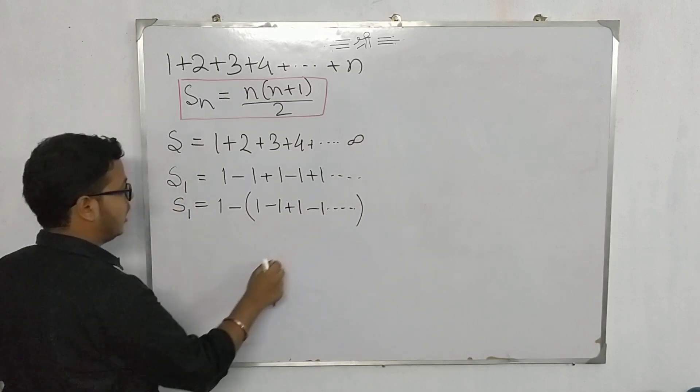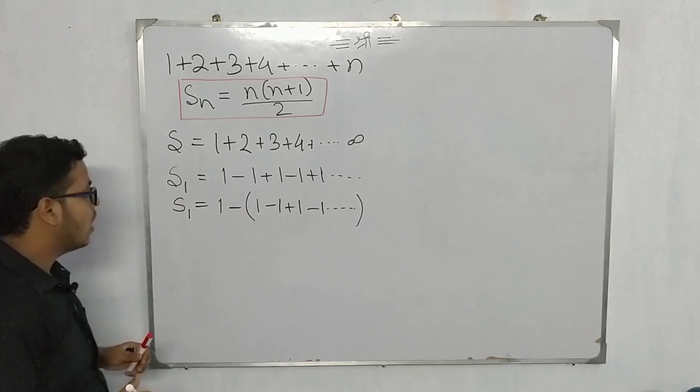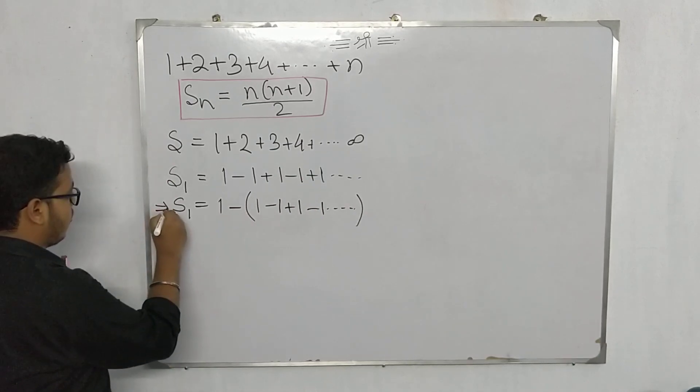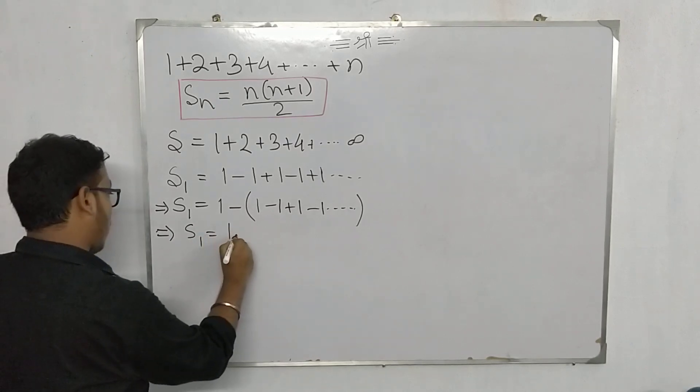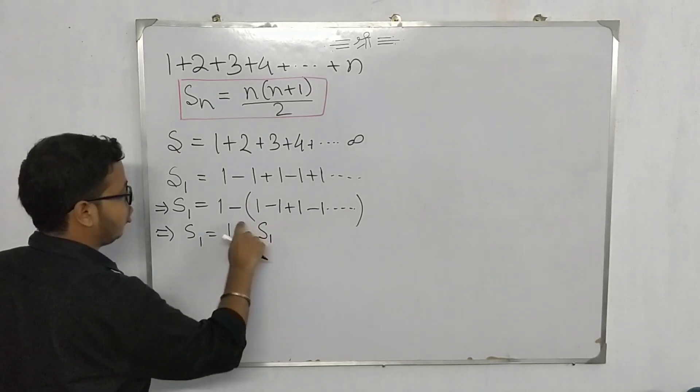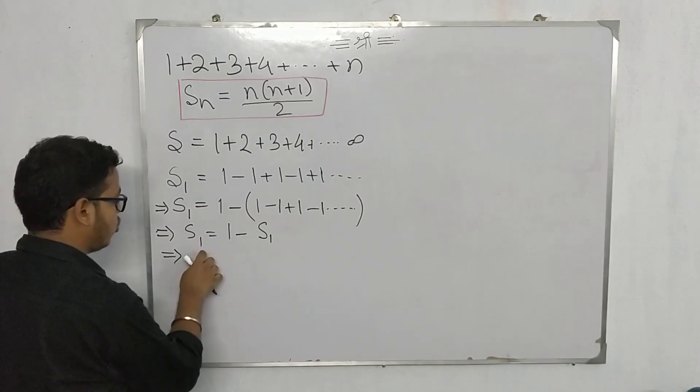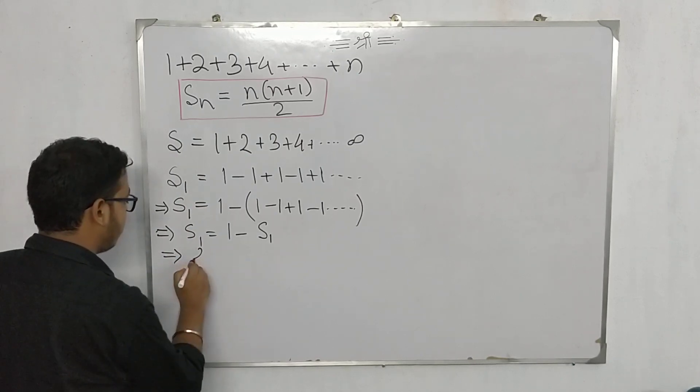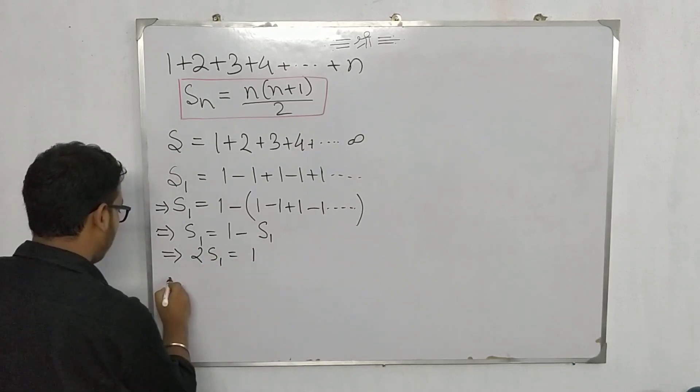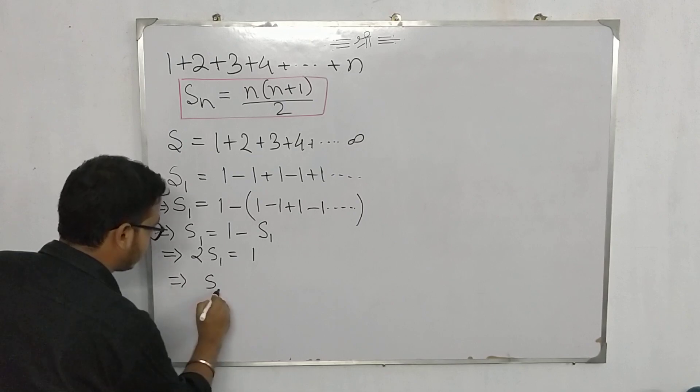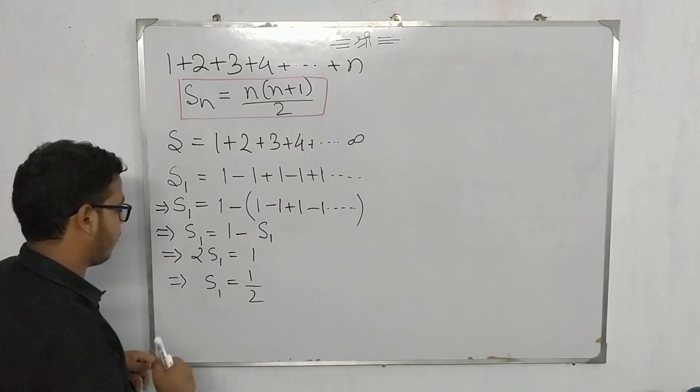If you closely notice, this term or this series particularly is the same as the series s₁ that we started from. So we can write this as s₁ = 1 - s₁. If we take the s₁ to the left hand side we get 2s₁ = 1, which means s₁ is equal to 1/2.